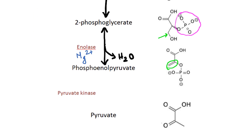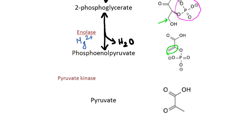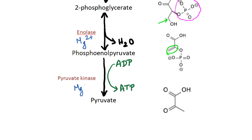The last reaction of glycolysis is going from phosphoenolpyruvate to pyruvate. In this reaction, ADP is converted to ATP and is carried out by pyruvate kinase with magnesium as a cofactor. Here you can see that the last phosphate group is removed.